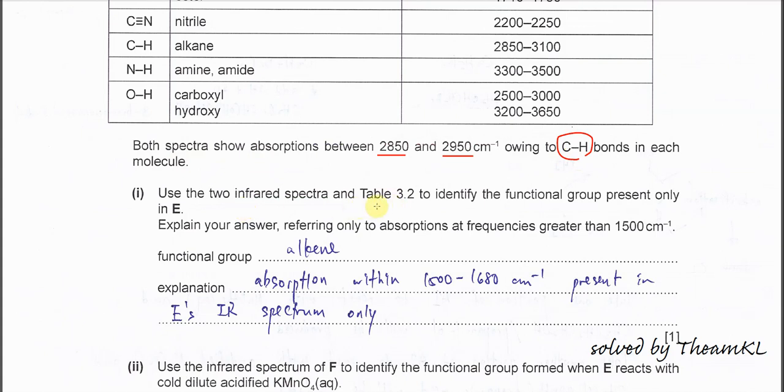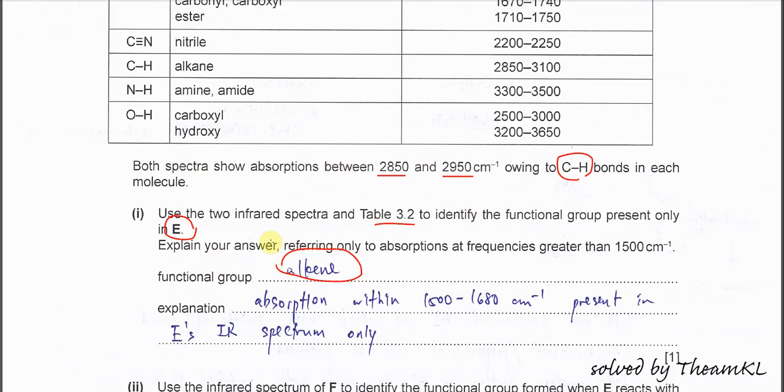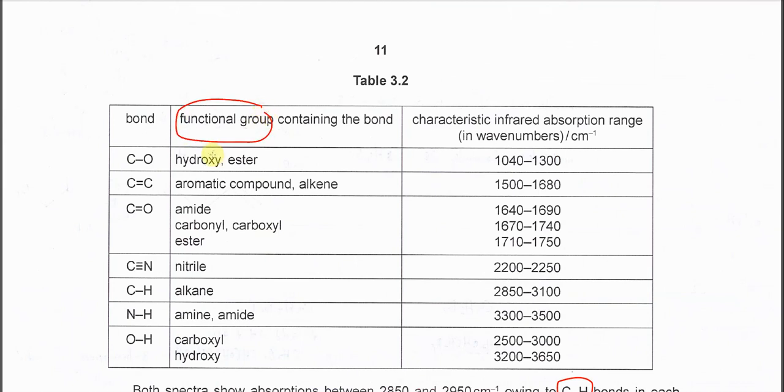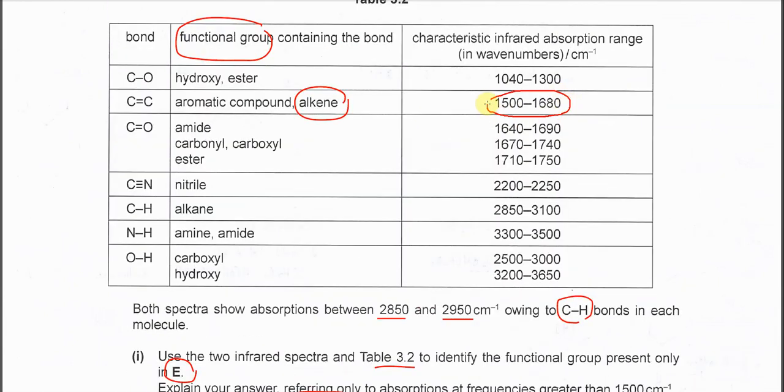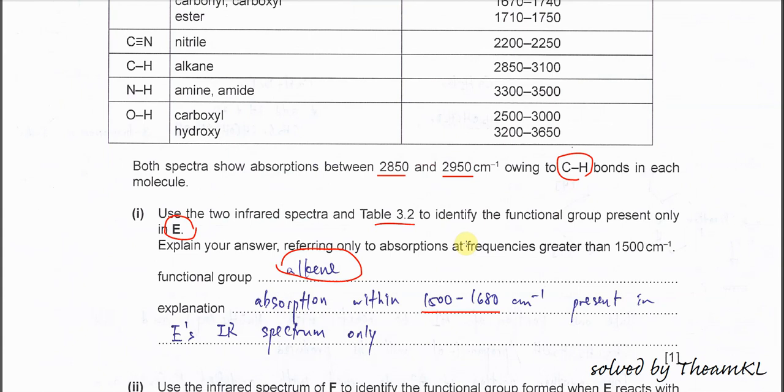Both spectra show absorption between 2850 and 2950, which indicates CH bond, so this is not really that significant. Use two IR spectra in table 3.2, identify the functional group present only in E. E is the first IR spectrum, so it shows the C=C double bond. Functional group is alkene. Remember it's functional group. You just choose from here, this column. So it's the alkene. Explanation: you just need to mention the absorption within 1500 to 1680, so it just present in the E's IR spectrum.